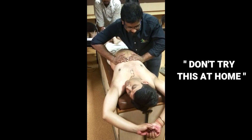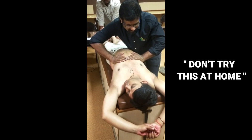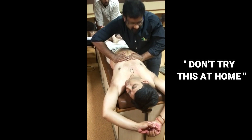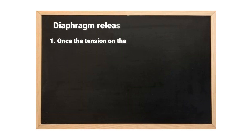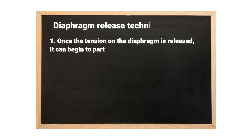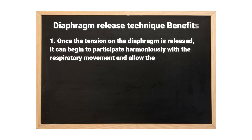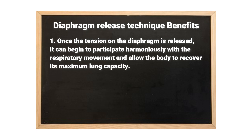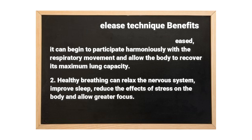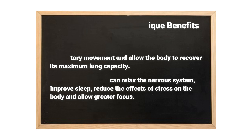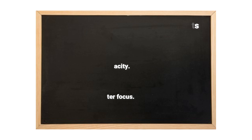Hold at the end to lock the ribs. When you get closer, give a fine gentle thrust to manipulate the diaphragm. Diaphragm release technique benefits: once the tension on the diaphragm is released, it can participate harmoniously with respiratory movements and allow the body to recover its maximum lung capacity. Healthy breathing can then relax the nervous system, improve sleep, reduce the effects of stress on the body, and allow greater focus.